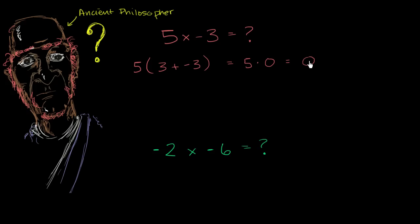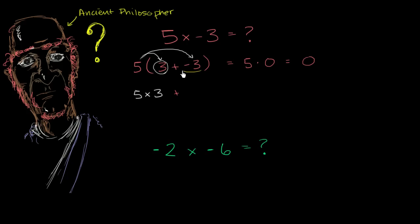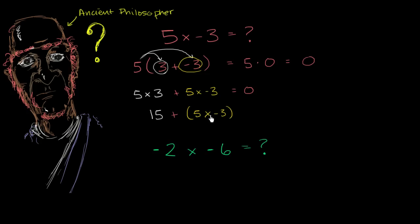On the other hand, you want multiplying positive and negative numbers to be consistent with the distributive property. So you should be able to distribute the 5, and for math to be consistent, you should get the exact same answer. Distributing: this is going to be 5 times 3 plus 5 times negative 3. And this whole thing we just said should be equal to 0. Well, 5 times 3 — two positive numbers — equals 15.